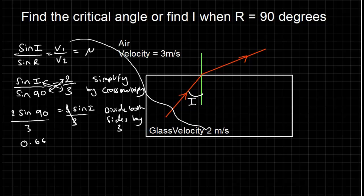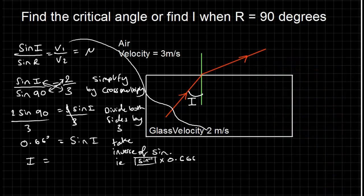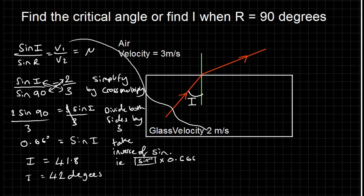On the calculator, I'm going to take the inverse of 0.66, or sine inverse of 0.66, to get i on its own. Calculating that gives me 41.8 degrees, which I can round up to 42 degrees. By the way, 42 degrees is nearly always the critical angle in the exam questions for some reason. They always use the same type of glass.